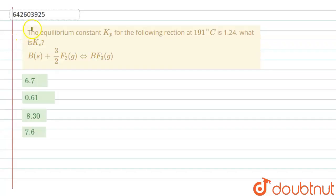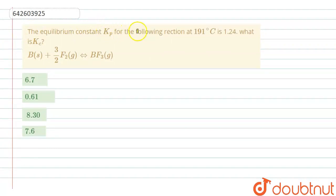The question is: the equilibrium constant Kp for the following reaction at 191 degrees Celsius is 1.24. What is Kc? This is the reaction given to you and four options are given. You have to select the right answer.